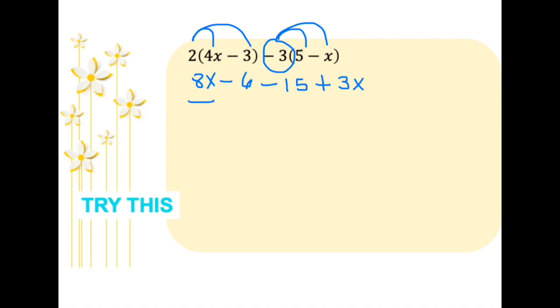Then we combine like terms. You have 8x and 3x, which are like terms, will be 8 plus 3, 11x. Negative 6 and negative 15 will be negative 21. Therefore, our final answer would be 11x minus 21.